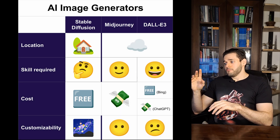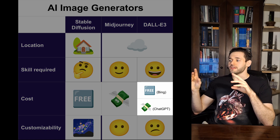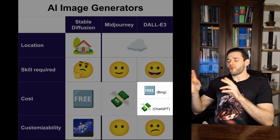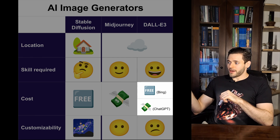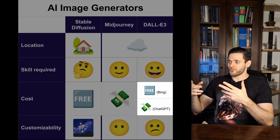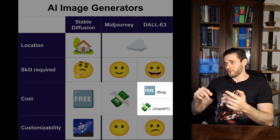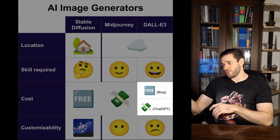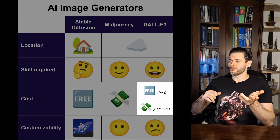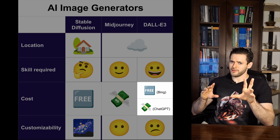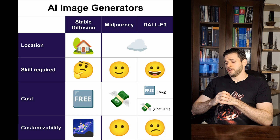MidJourney is paid. DALL-E 3 can be free or paid. If you access DALL-E 3 through Bing, it is free. If you access it through ChatGPT-4, then it costs — or at least used to cost — $10 a month.